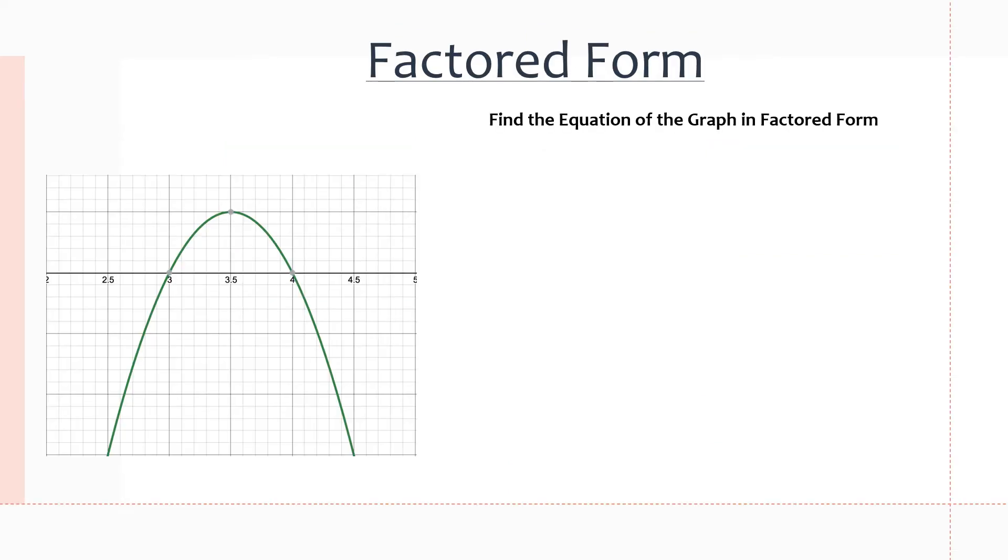Okay, so in this example, we're going to be using factored form to find the equation of this graph. So factored form is over here, a(x-r)(x-s). So if we look at the properties of this function, the graph is opening downwards. That means you have a negative coefficient. There is an axis of symmetry at x equals 3.5. And there are two x-intercepts, one at (3,0) and another at (4,0).